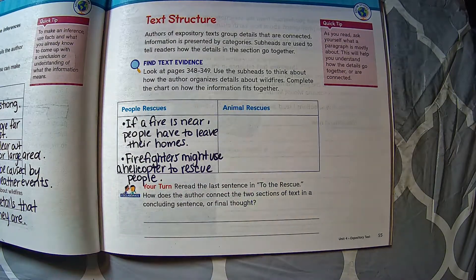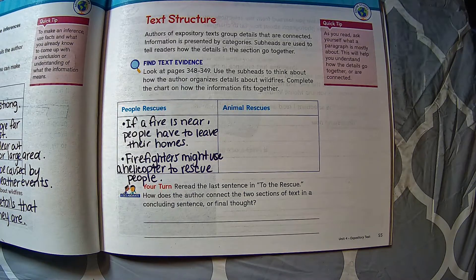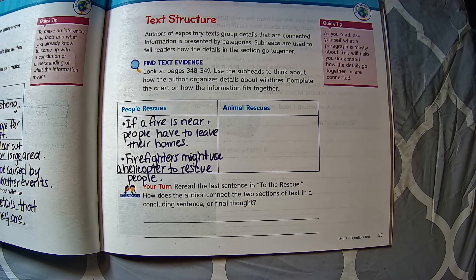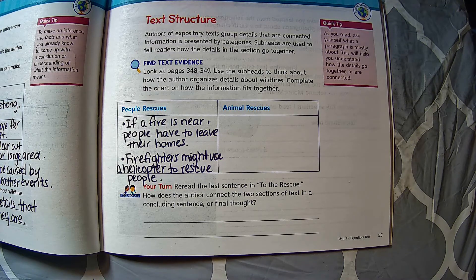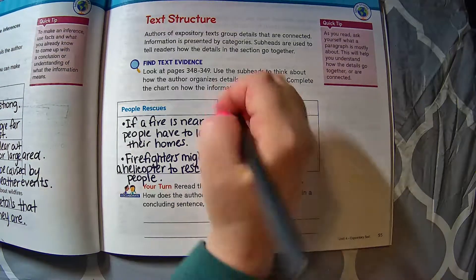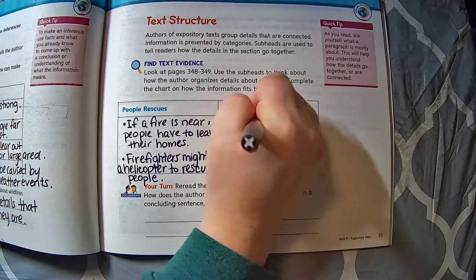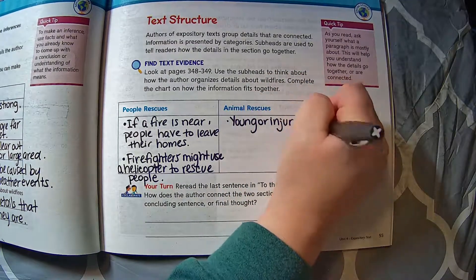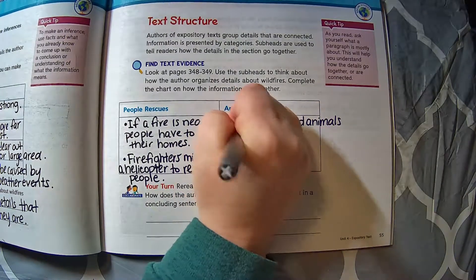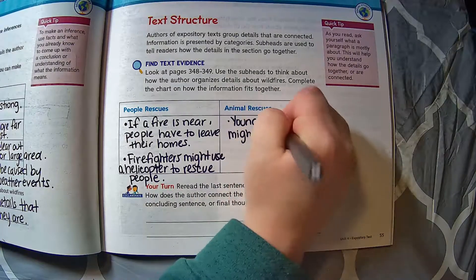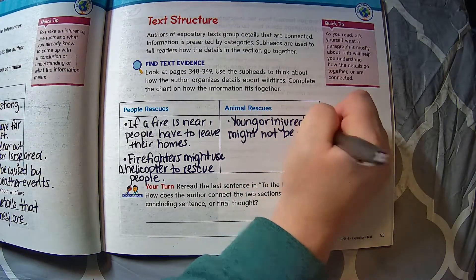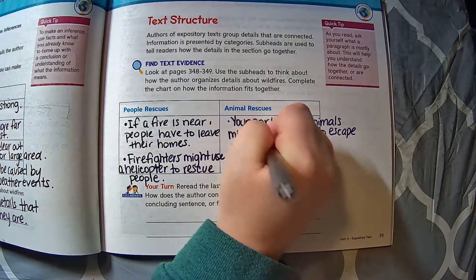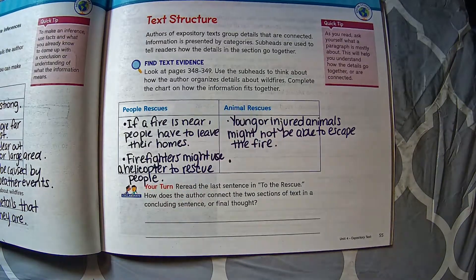And then under animal rescues, recall back to when you just listened to the story about what information was provided under the animal rescues subheading. It talked about young or injured animals might not be able to escape the fire. So young or injured animals might not be able to escape the fire. Remember, you're following along with me. Pause if you need to catch up.